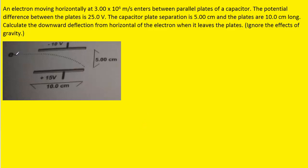The key concept here is that when the electron enters the region between the plates, it's going to experience an electric force that will be pushing down on the electron. We can label that force Fe. We know that an electric force acting on a charged particle is equal to the magnitude of the charge times the electric field.